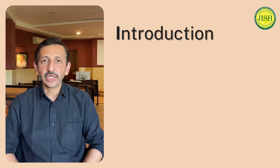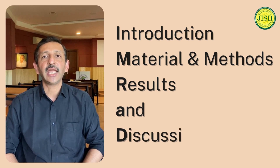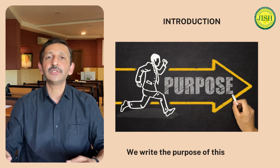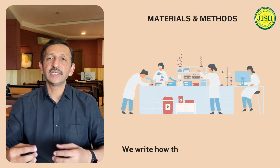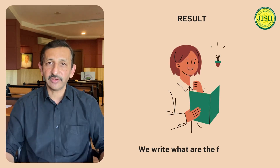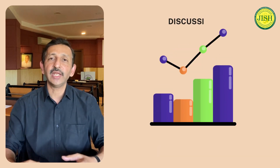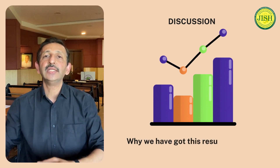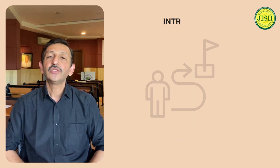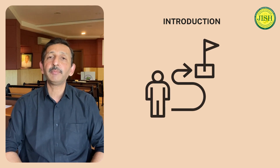What is IMRAD? The full form of IMRAD is Introduction, Material and Method, Result, and Discussion. In a nutshell: in the Introduction, we write the purpose of the research; in Material and Method, we write how the research is conducted; in the Result section, we write the findings; and in Discussion, we write why we got the result and what it means.